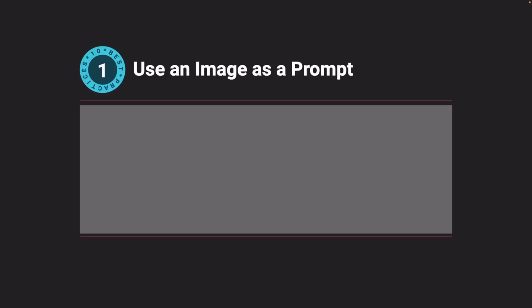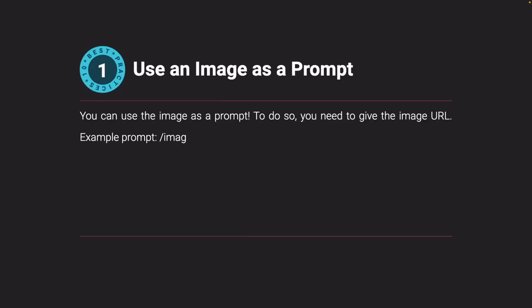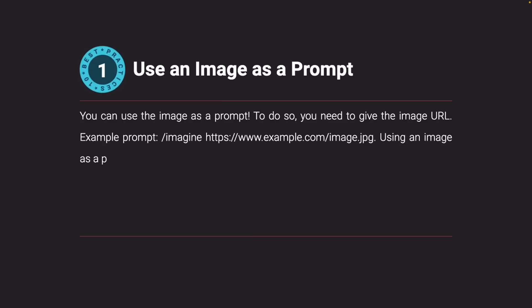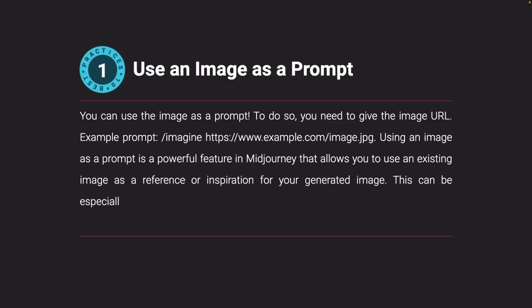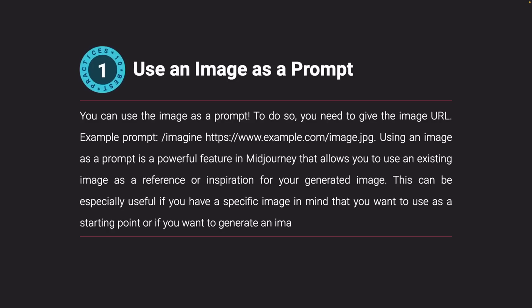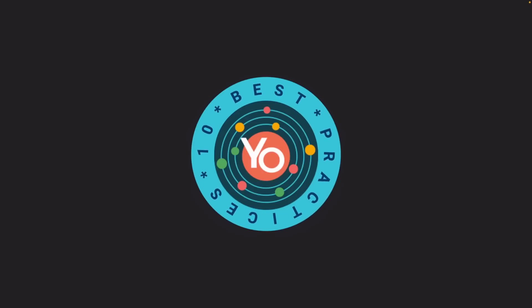Use an image as a prompt. You can use an existing image as a prompt by providing its URL — for example: '/imagine https://www.example.com/image.jpg.' This is a powerful feature that allows you to use an existing image as a reference or inspiration for your generated image, especially useful if you have a specific starting point in mind. By following these tips and experimenting with different keywords, you can greatly improve your Midjourney results.